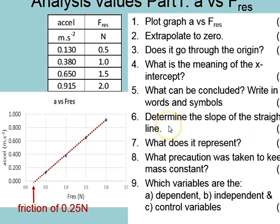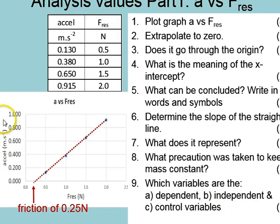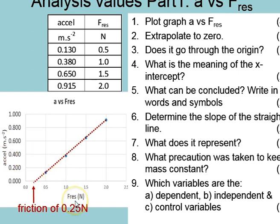We then must determine the slope of the line, the gradient, and tell us what that represents. Also, what precautions were taken to keep the total mass constant, and which variables are dependent, independent, and control variables. Y is a function of x — y depends on x. So here we have acceleration depends on resultant force, acceleration being the dependent variable and resultant force the independent, and the control variable is that of mass.